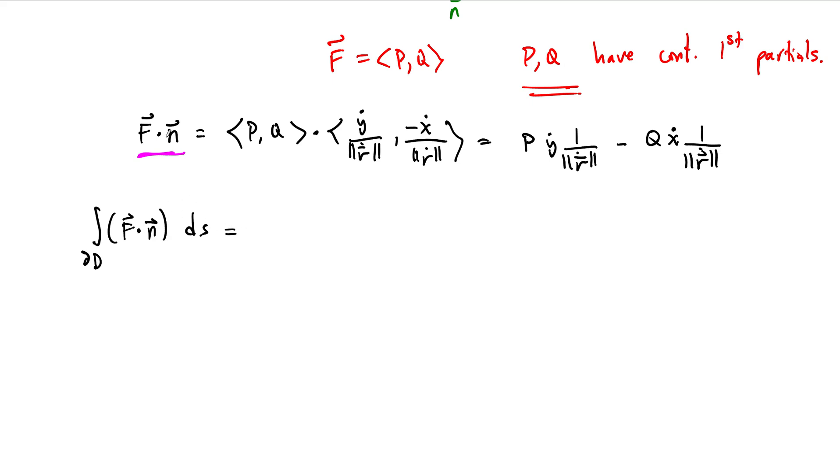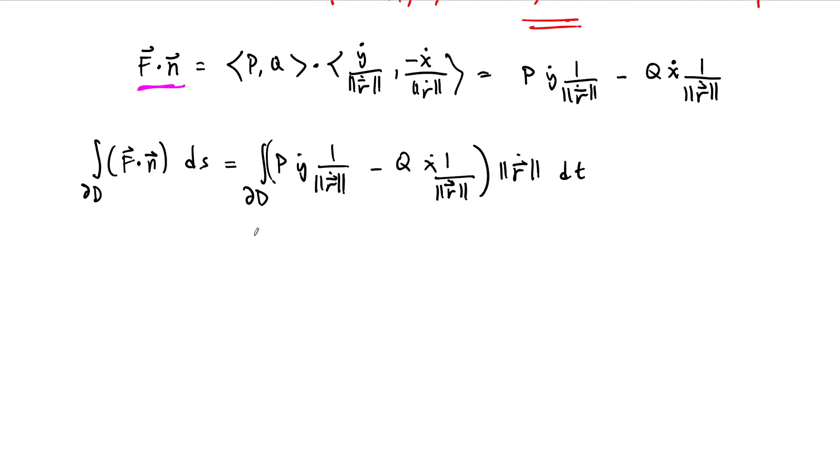I want to integrate this around the boundary. This function, this is a function now after I've done the dot product. F dot N with respect to arc length. DS, that's a usual path integral with respect to arc length of a function. And at this point, what I'm going to do is substitute in this dot product, but also remember what DS is. So this is then integral of the path of P times Y dot times 1 over length of R dot minus Q times X dot times 1 over length of R dot times DS. But DS is length of R dot DT. And so now if we work this out, what do we end up with? All these length of R dots are going to cancel. And when this gets written out, we end up with integral over the boundary curve of P times Y dot DT minus Q times X dot DT.